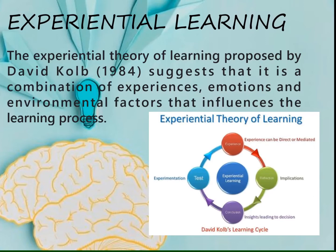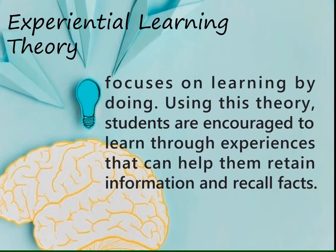The experiential theory of learning, proposed by David Kolb in 1984, suggests that it is a combination of experiences, emotions, and environmental factors that influences the learning process. According to David Kolb's learning cycle, the four stages are: number one, experience — which can be direct or simulated; number two, reflection or implication; number three, conclusion or the insights leading to decision; and number four, test or experimentation. Experiential learning theory focuses on learning by doing, encouraging students to learn through experiences that help them retain information and recall facts.